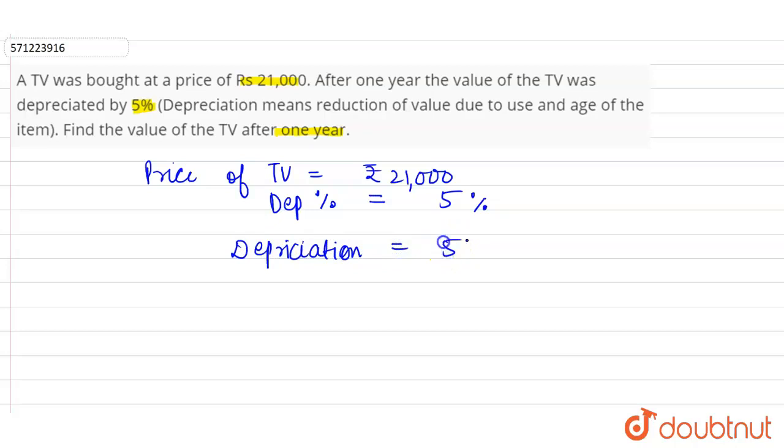So 5% of 21,000 is the depreciated amount. 5% means 5 divided by 100 times 21,000. Two zeros are cancelled, this equals 21 times 5. 21 times 5 is 105, so 1,050 is the amount of depreciation.